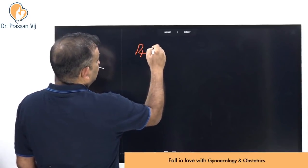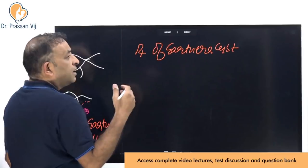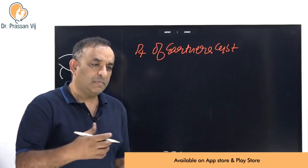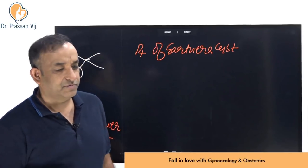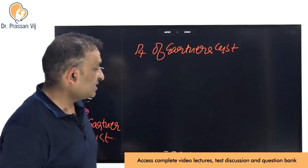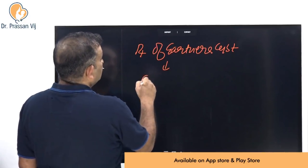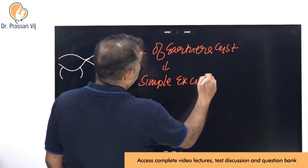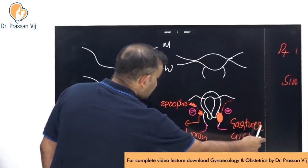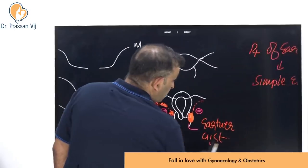The treatment of the Gartner's cyst is only needed when a patient presents for something else — vaginitis or abdominal pain — and a vaginal examination incidentally reveals the cyst. It may become large and cause some heaviness. The treatment is simple excision — not marsupialization. Gartner's cyst is in the upper lateral vaginal wall, and simple excision is the treatment.